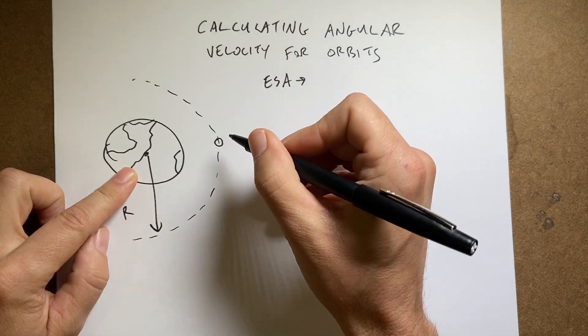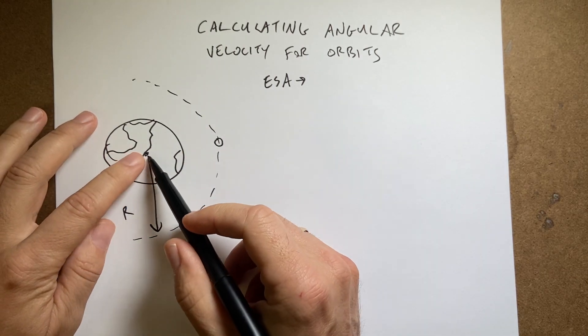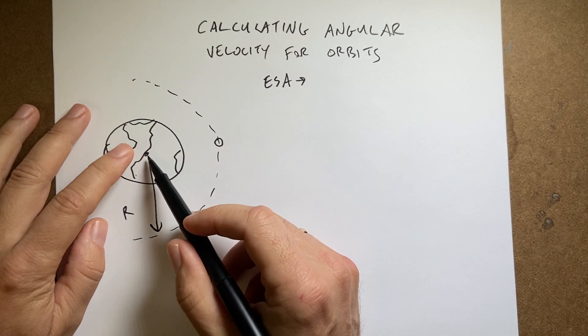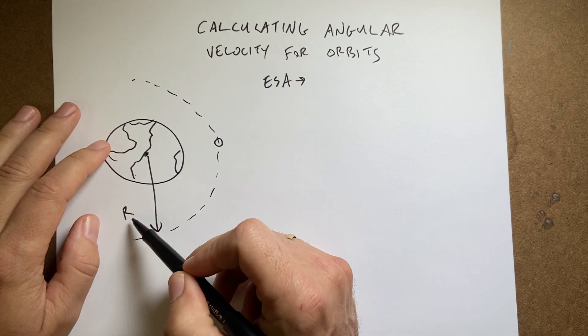So here's the Earth, and here's the object. And so this is orbiting at an orbital radius, which is from the center of the Earth, a value of r.